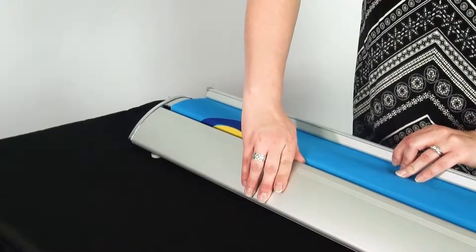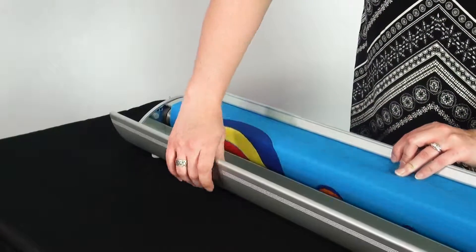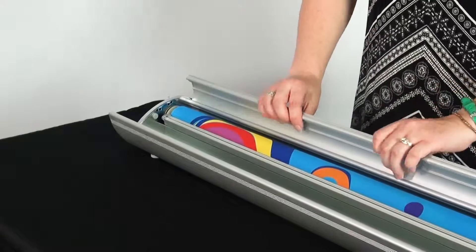Start off by rolling your banner out six inches and open up the front panel and flip open the back panel.